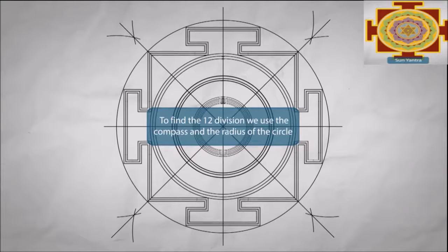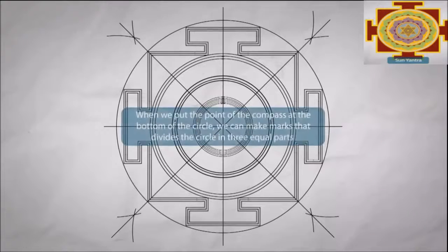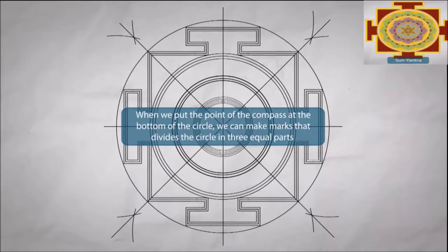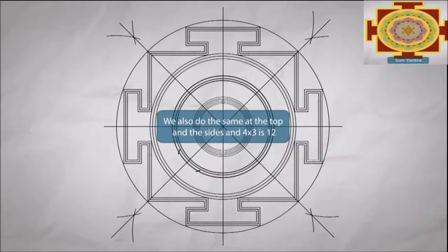To find the twelfth division we use the compass and the radius of the circle. When we put the point of the compass at the bottom of the circle we can make marks that divide the circle in three equal parts. We also do the same at the top and the sides, 4 by 3.